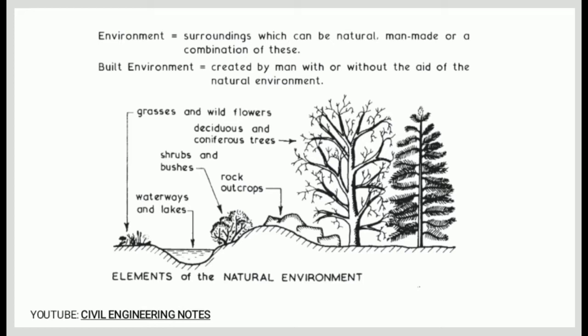We can see from the illustration some of the elements of the natural environment: grasses and wildflowers, waterways and lakes, shrubs and bushes, deciduous and coniferous trees, and rock outcrops.